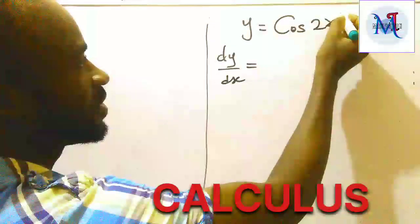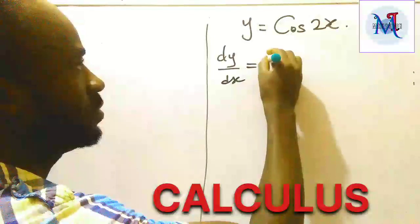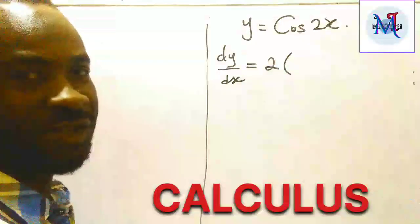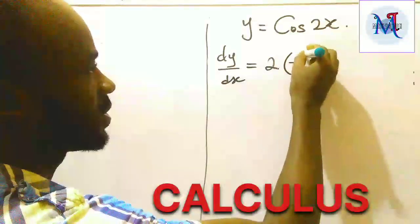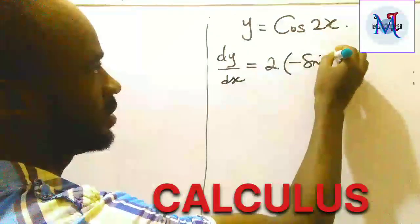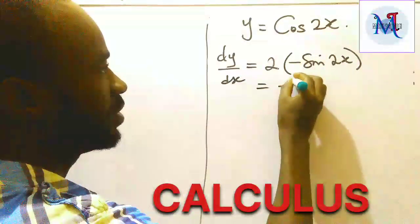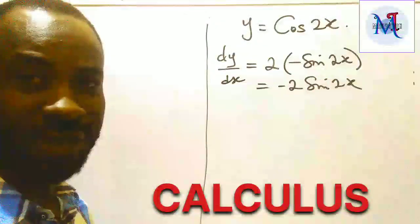Differentiate the term 2x, which gives us 2. Then differentiate cosine, which gives minus sine 2x. So dy/dx = -2 sin 2x.